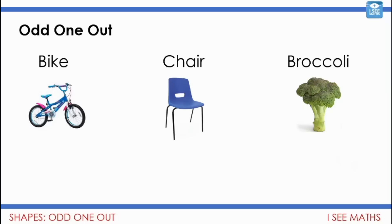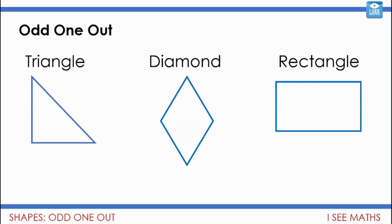Okay, I'll give you my reasons for each. Well, the broccoli is the odd one out because it's a food and it's not man-made. But what could make the chair the odd one out? Actually, the chair is the odd one out because the broccoli and the bike keep you healthy. No wait - the bike is the odd one out because the chair and broccoli you might find in the school hall at lunchtime, but you wouldn't find a bike there. So I managed to find a reason why each one might be the odd one out!